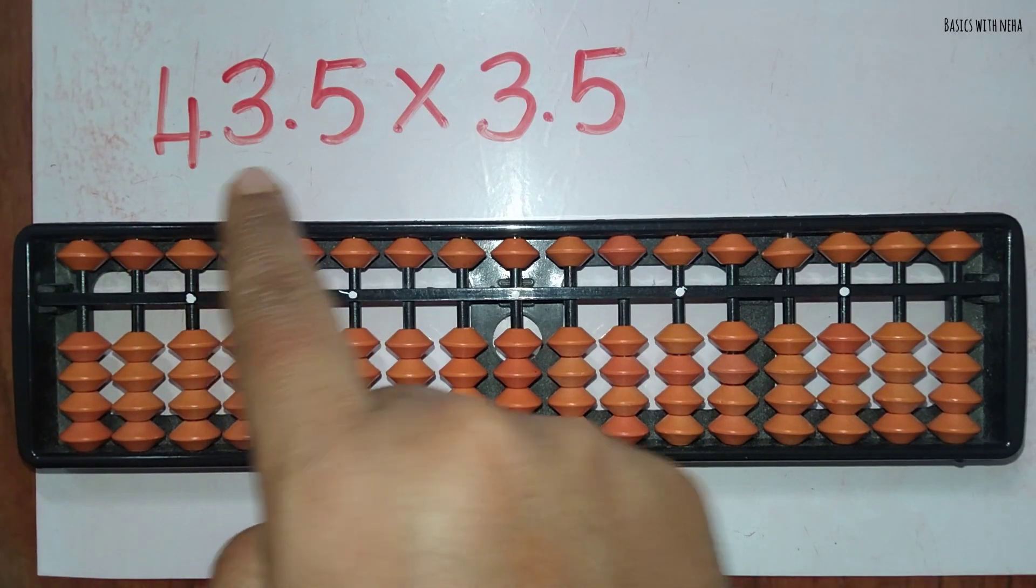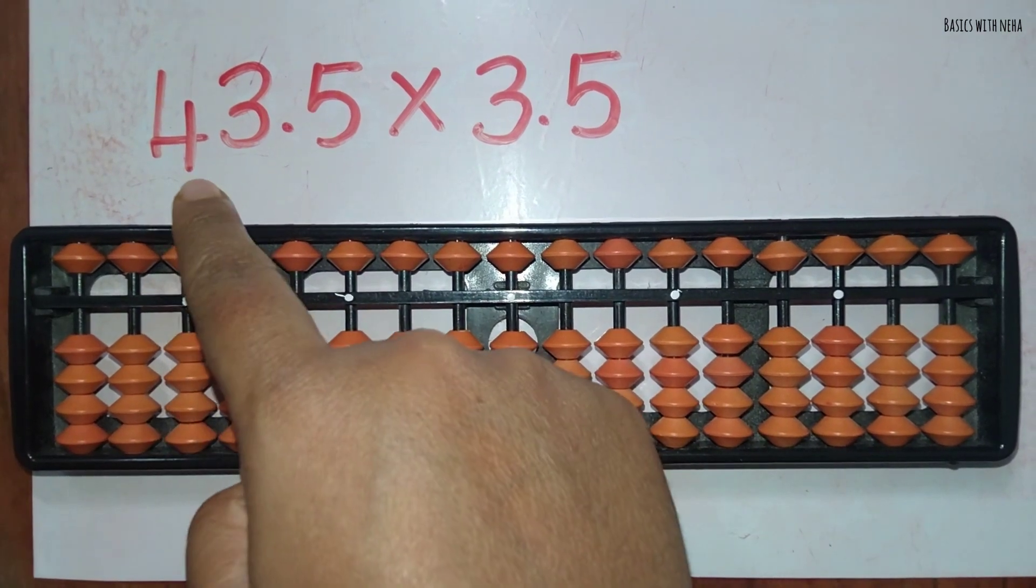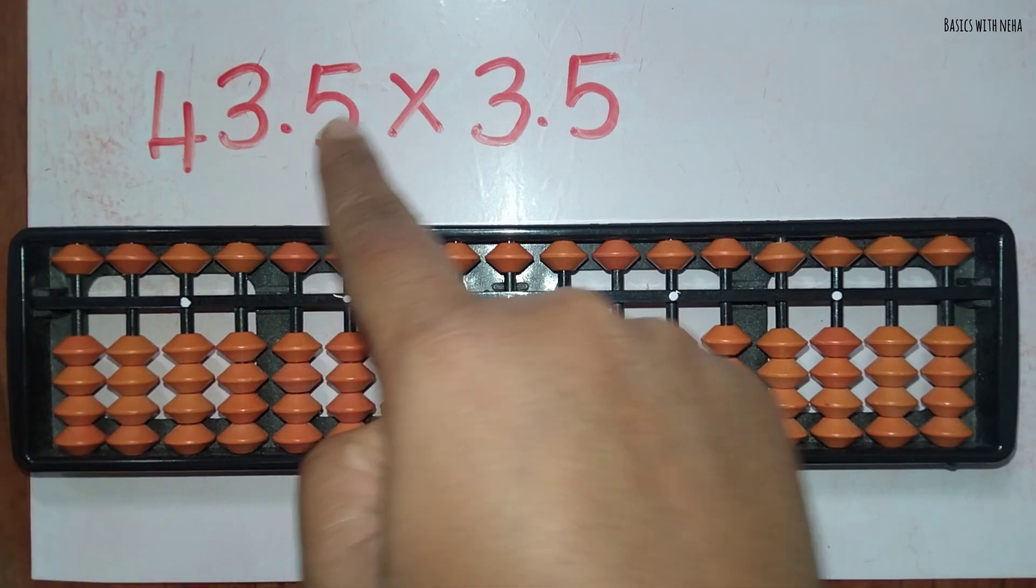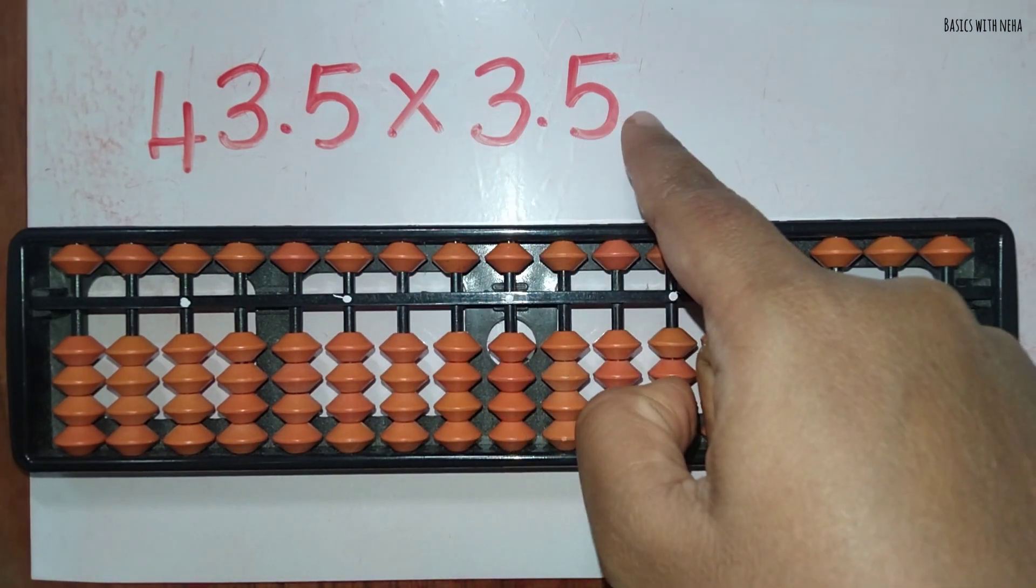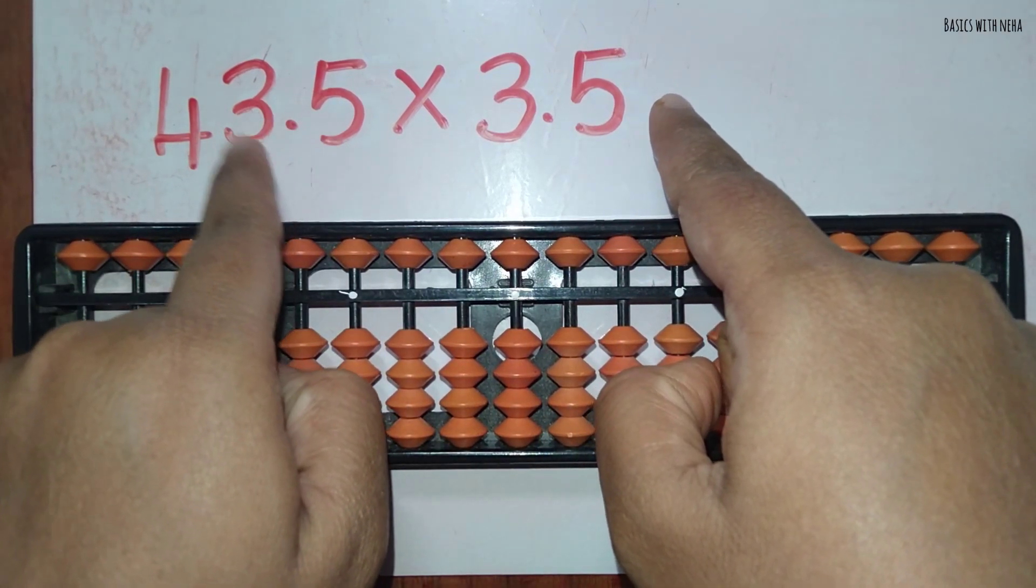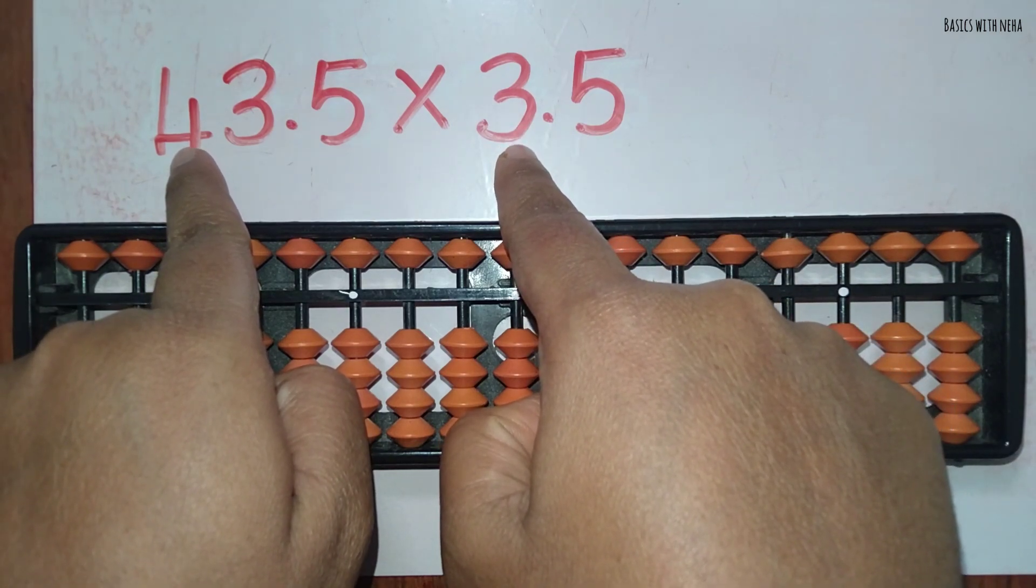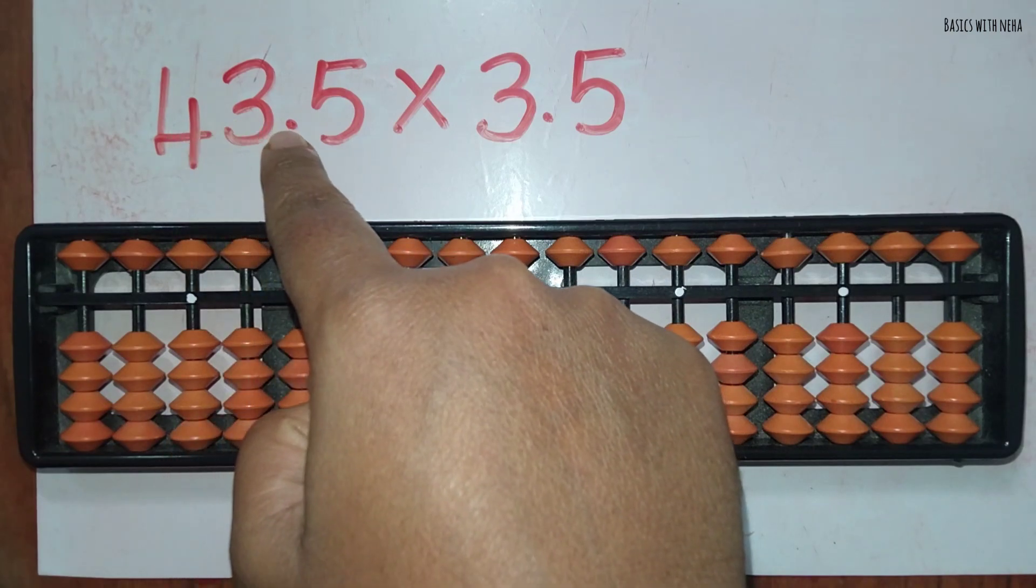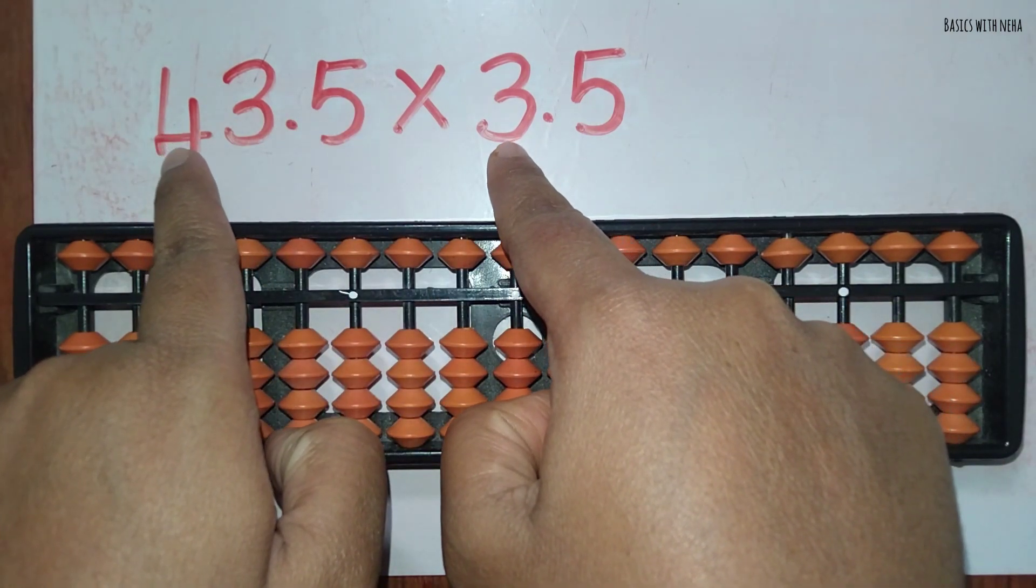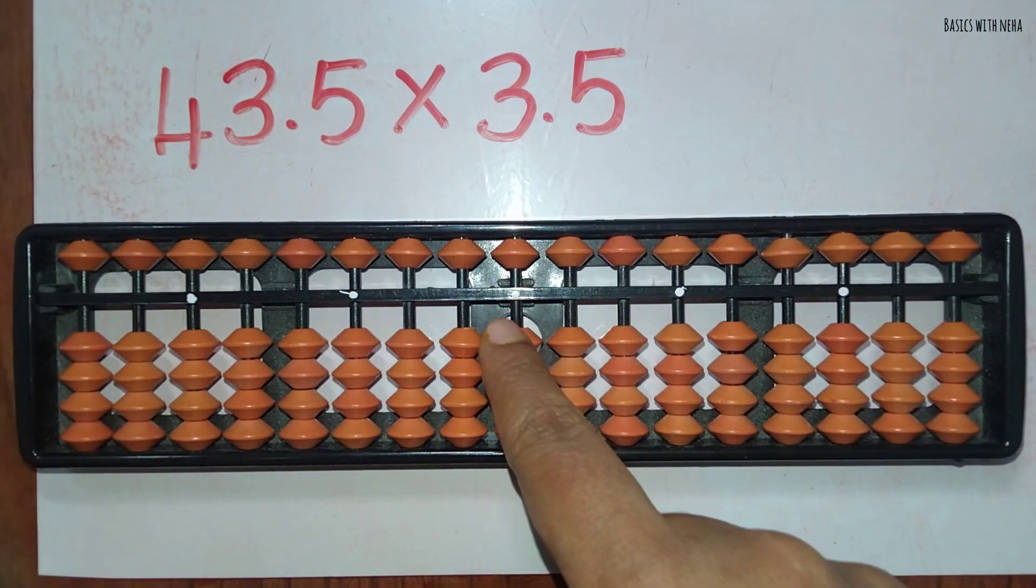Decimal multiplication: 43.5 into 3.5. The multiplicand is having a 43 number and a decimal afterwards, and the multiplier is having 3 and a decimal afterwards. So you should consider one's place and ten's place in the multiplicand and only one's place in the multiplier. That makes three numbers: 43 into 3. So you have to consider that place value: ten's place, one's place, and one's place. That is totally three numbers.